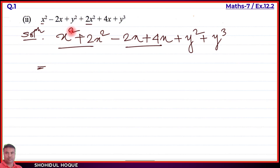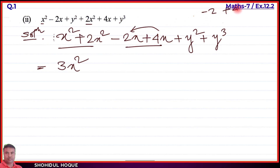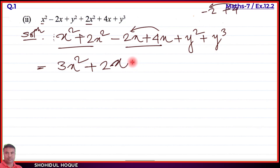Simplifying Part 2: one x² plus two x² equals three x². For the x terms, minus 2x plus 4x equals plus 2x. The y² term stays as it is, and the y³ term also stays as it is. So the simplified expression for Part 2 is three x² plus 2x plus y² plus y³.